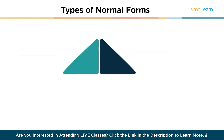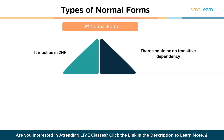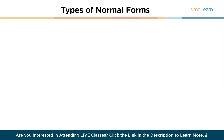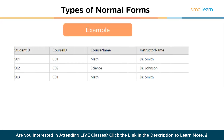Let's now talk about the third normal form (3NF). For a table to be in 3NF, it must be in 2NF and have no transitive dependency, where non-key attributes depend on other non-key attributes rather than the primary key. Consider the following table that is in 2NF. The problem is transitive dependency: the instructor name is dependent on the course name, which is not directly dependent on student ID or course ID, and this violates 3NF.